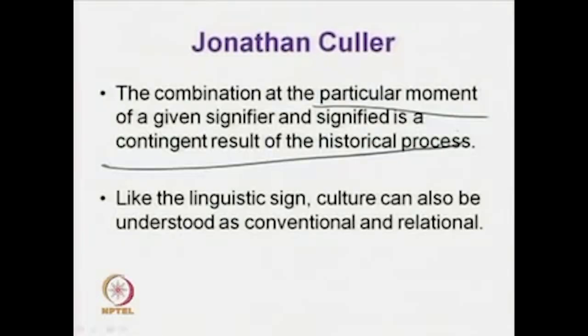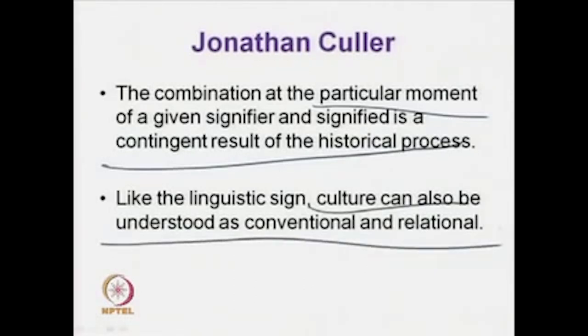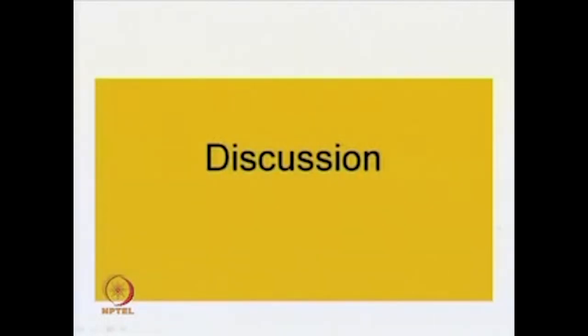We shall end with a point given by one of the famous structuralist critics, Jonathan Culler. Culler says that the combination at a particular moment of a given signifier and signified is a contingent result of the historical process. So if you understand the historicity and the spatial and temporal situatedness of a meaning connection between the signifier and the signified, then you understand that these are constructs — constructs in time and space which, only because of repeated use and legitimation by power structures, have become naturalized and conventionalized, but they are not givens.